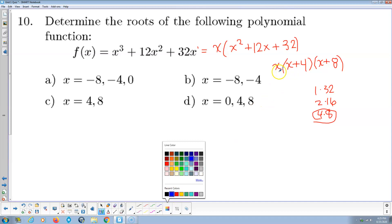And then it's like, okay, so when does x equal 0? Well, when x is 0. When does x plus 4 equal 0? When x is negative 4. When does x plus 8 equal 0? When x is negative 8. There's my three roots. So negative 8, negative 4, 0. Answer A.